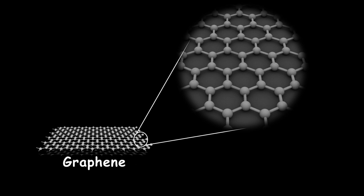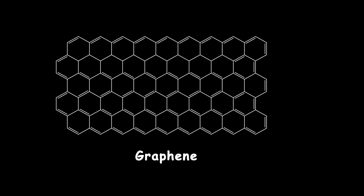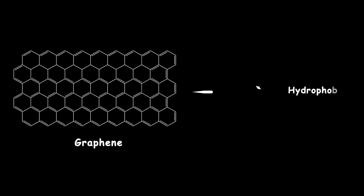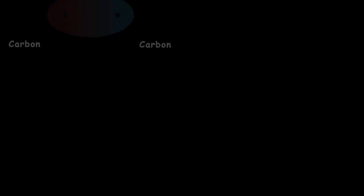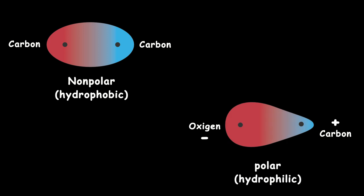We know that the properties of a material are directly related to the chemical structures and their functional groups, and we know that graphene is highly hydrophobic and poorly disperses in water, so its biological applications are limited.